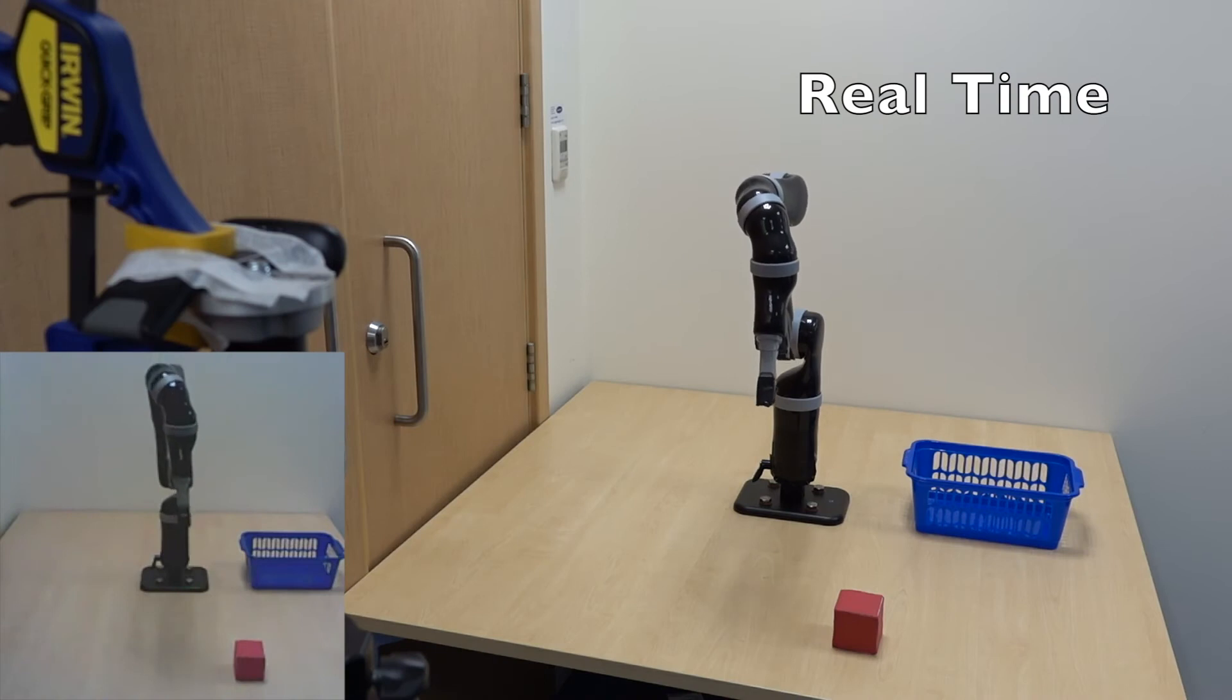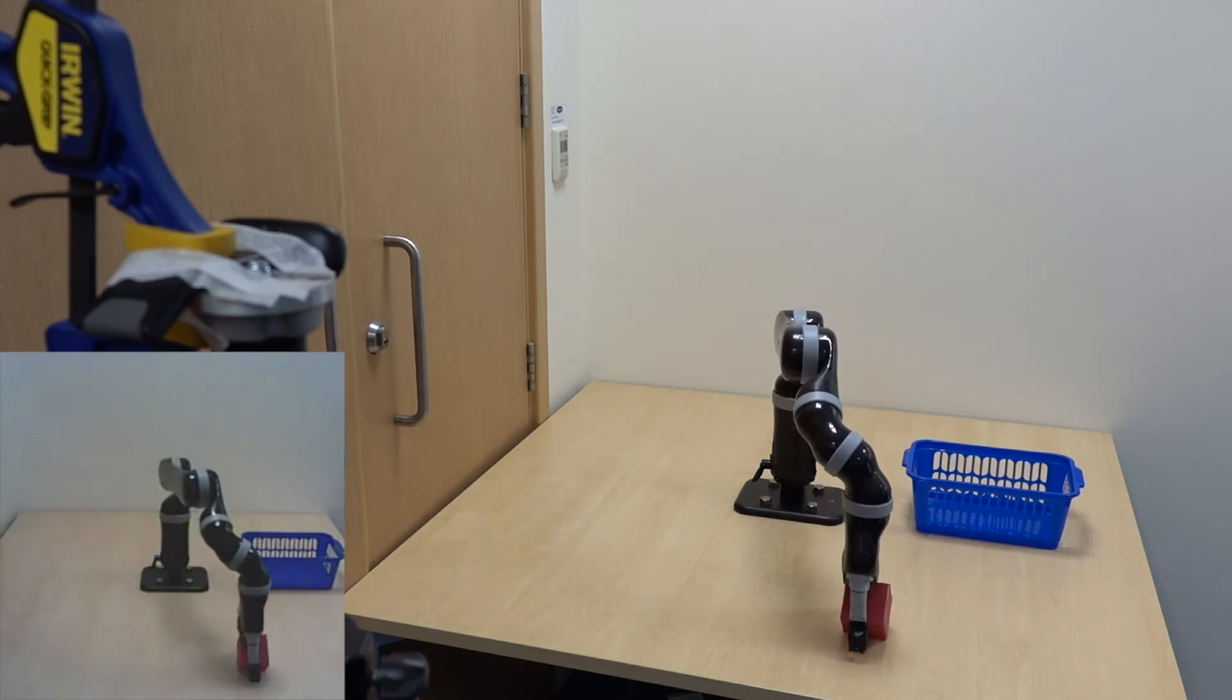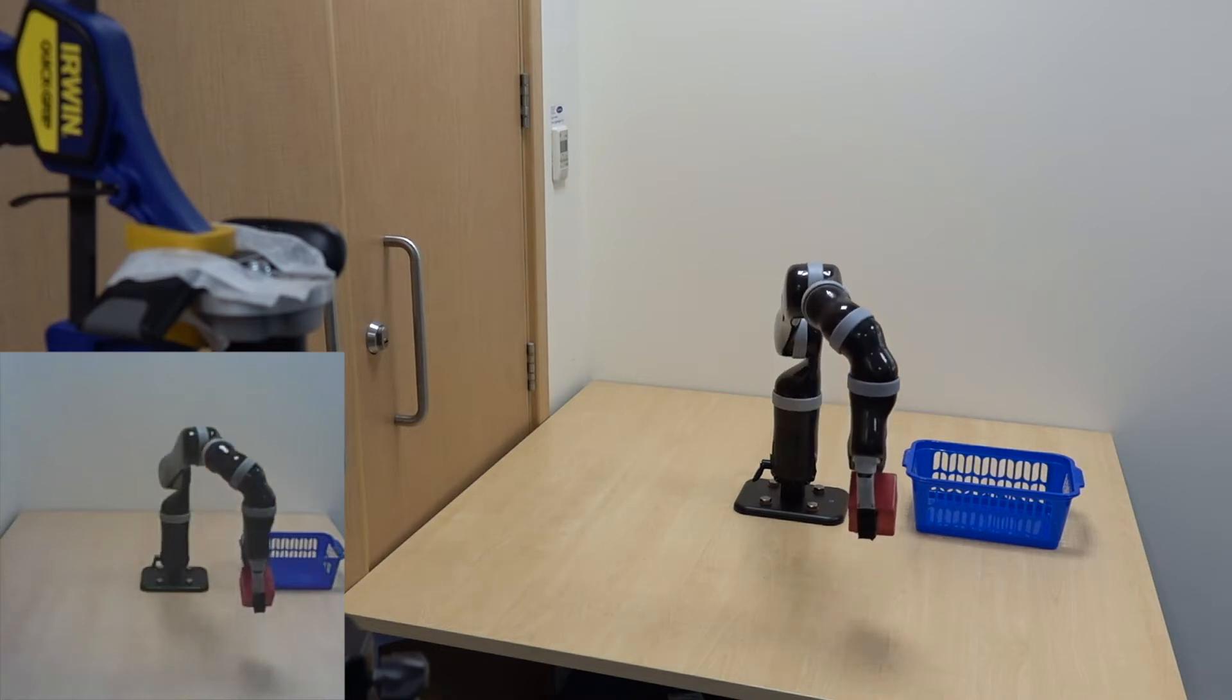In the following clips, we demonstrate how the controller operates when seeing the real world for the first time. The network continuously receives images from our webcam, whose output we can see in the bottom left corner.